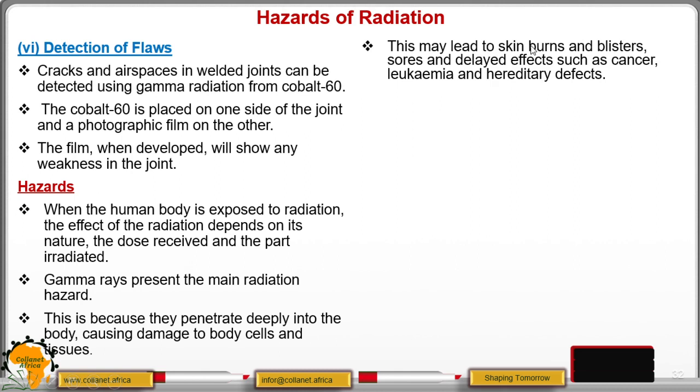You should be able to ensure that you avoid the radiations at all costs. This may lead to skin burns, blisters, delayed effects such as cancer, leukemia, and hereditary defects. These are some of the hazards, some of the problems that are created by the exposure to the radiations. Extremely heavy doses of radiation may even cause death.